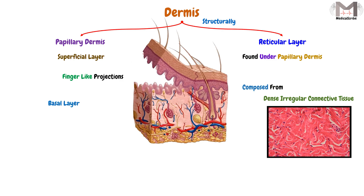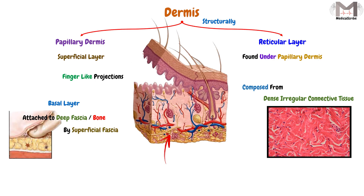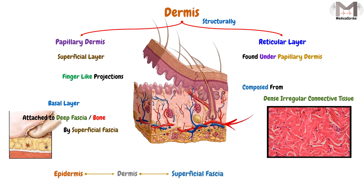The basal layer of the dermis will be attached to the deep fascia, or attached to the bone, by the superficial fascia. That means, going from top to bottom, we first have the epidermis, then the dermis layer, then the superficial fascia, then the deep structures such as the deep fascia, the muscles, or the bones.